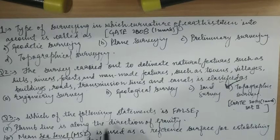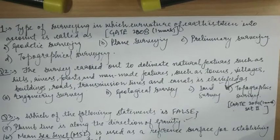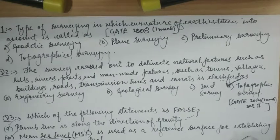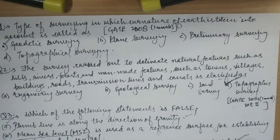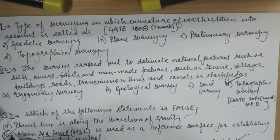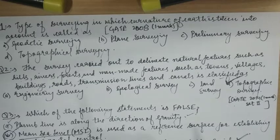Third question: 'Which of the following statements is false?' Statement one: plumb line is along the direction of gravity — correct. Statement two: mean sea level is used as a reference surface for establishing the horizontal control. Statement three: mean sea level is a simplification of geoid — correct. Statement four: geoid is an equipotential surface of gravity — correct. The odd one out is Option B — mean sea level is used as a reference surface for establishing the vertical control, not horizontal control. So Option B is false.